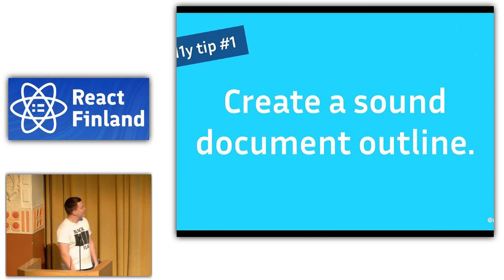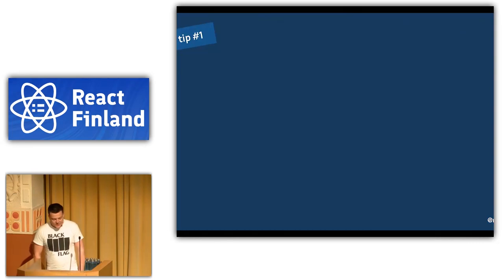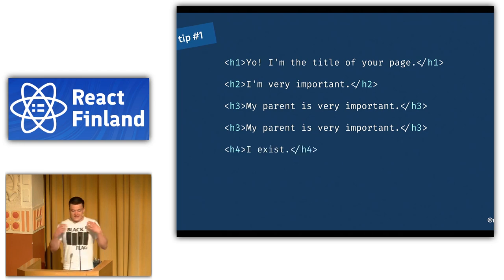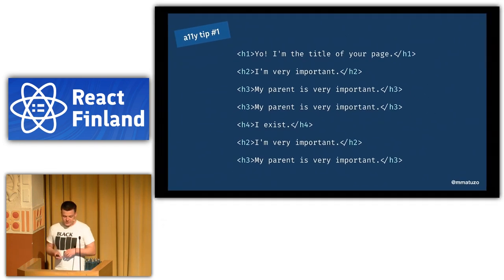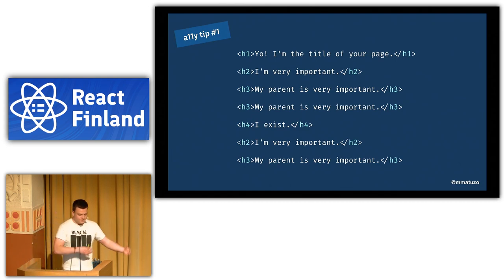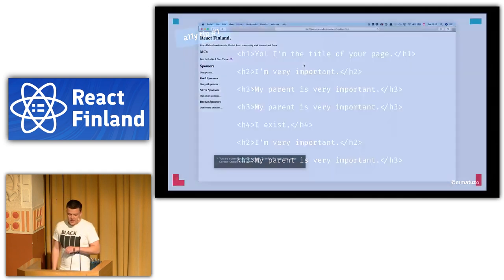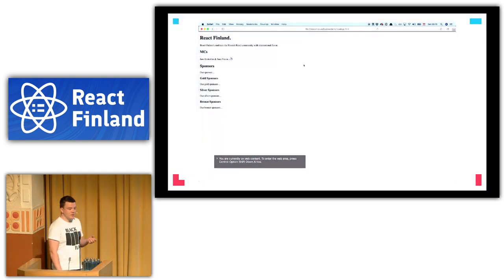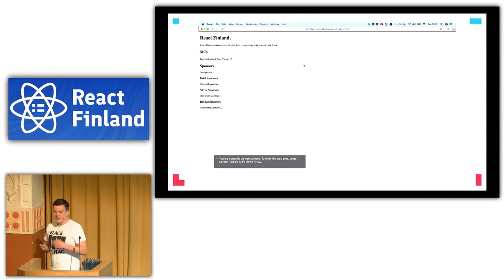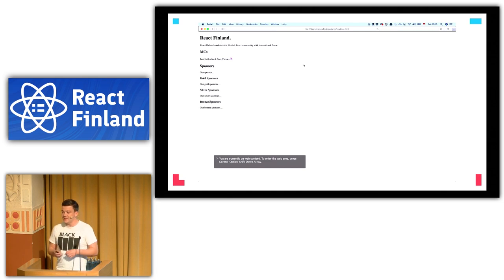Tip number one: create a sound document outline. If you have a document, you should start with an h1 — ideally an h1 with the title of your page. If you have a large section (a thematic group of content), start it with an h2. If you have a subsection, use h3, h4, and so on. Then for another large section, go back to h2. This is really important for many reasons, including that screen reader users navigate pages by headings rather than reading top to bottom.